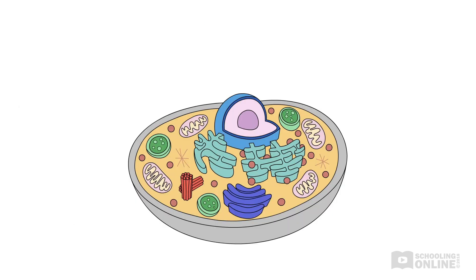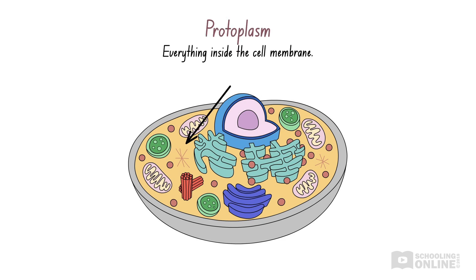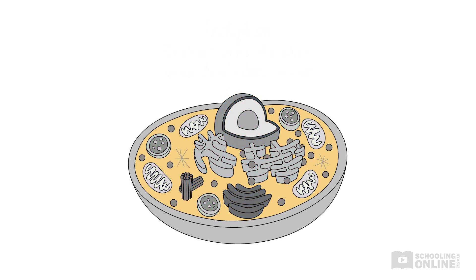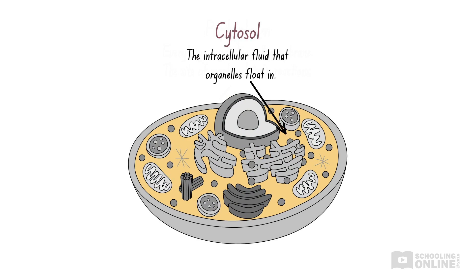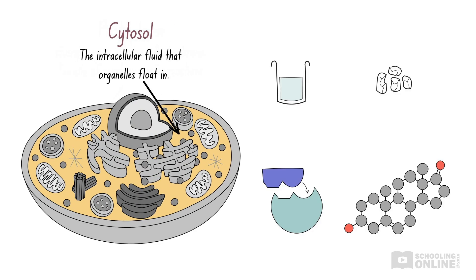Once we successfully pass through the cell membrane, we enter the interior of the animal cell. Inside the cell membrane lies the protoplasm, which consists of everything inside the cell membrane. Most metabolic reactions essential to the animal's survival occur in the protoplasm — these are chemical reactions that occur in living organisms, such as respiration and protein synthesis. The protoplasm consists mostly of cytosol, the intracellular fluid that organelles float in, composed of water, salts, enzymes and organic molecules.